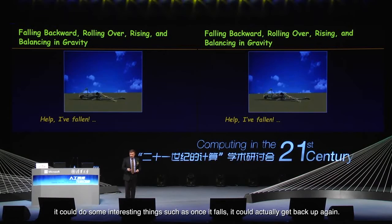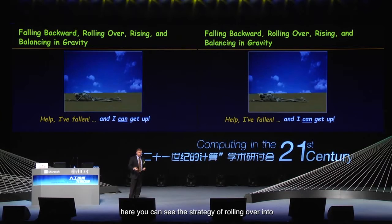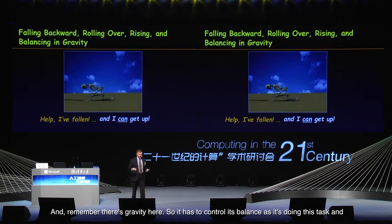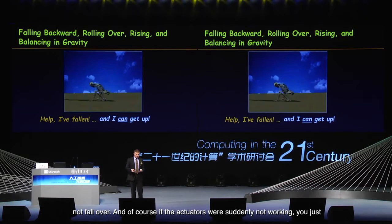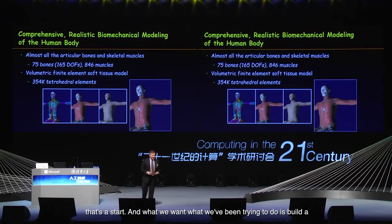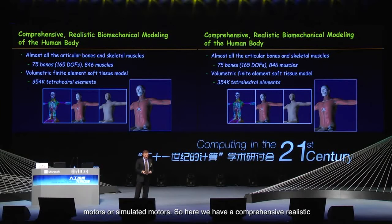Nevertheless, it can do some interesting things. Once it falls, it can actually get back up again — a challenging control task in itself. Here you could see the strategy of rolling over into a prone position and then getting up on all fours. Remember, there's gravity here, so it has to control its balance throughout this task. But we want to build a much more high-fidelity model of the human body that involves muscles rather than simulated motors.